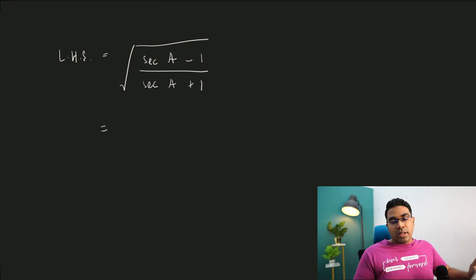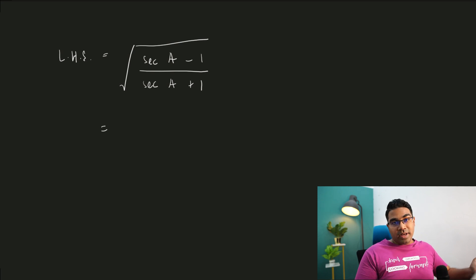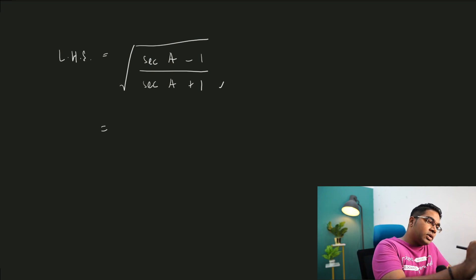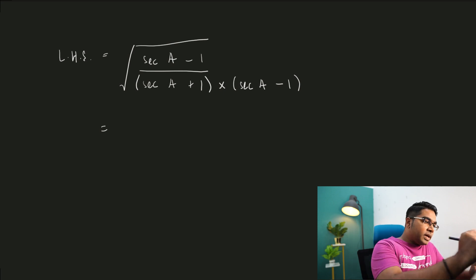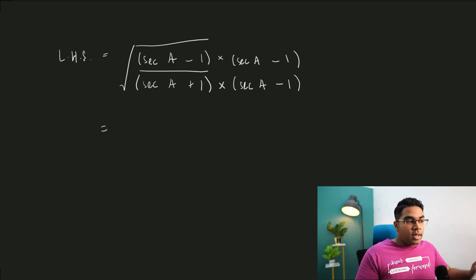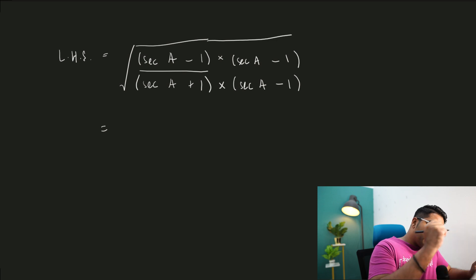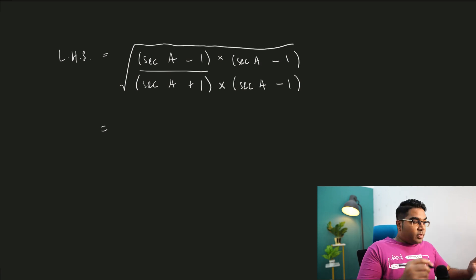Here we have secant a plus 1 in the denominator and secant a minus 1 in the numerator. What we can do is multiply both numerator and denominator by the conjugate. Since the denominator has plus 1, we multiply by secant a minus 1, and we do the same to the numerator with secant a minus 1. The whole expression is still under the square root — we have not eliminated it yet.